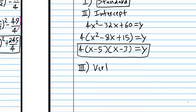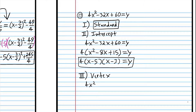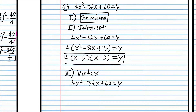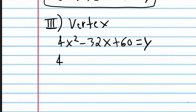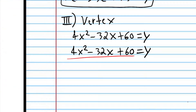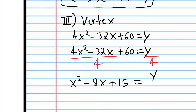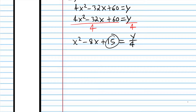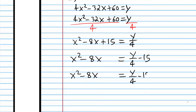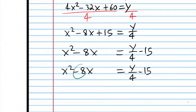To do that, we need to start with the original standard form expression. We need to complete the square, but we can't with a coefficient on the x squared term. So we're going to divide by 4 to get rid of that coefficient. We get x squared minus 8x plus 15 equals y over 4. Before completing the square, we need to move the 15 to the other side.